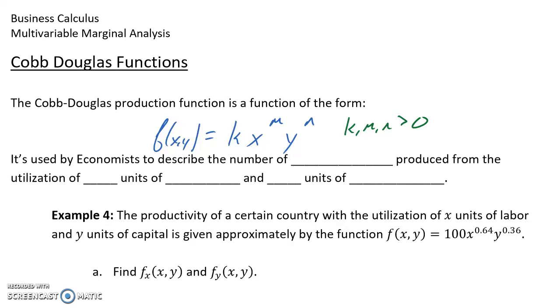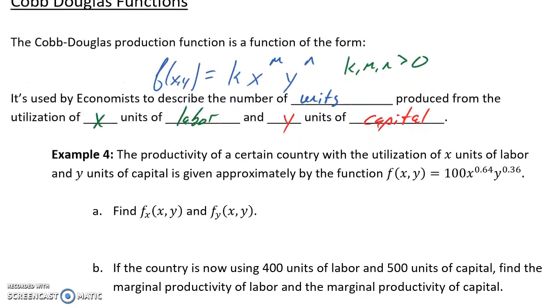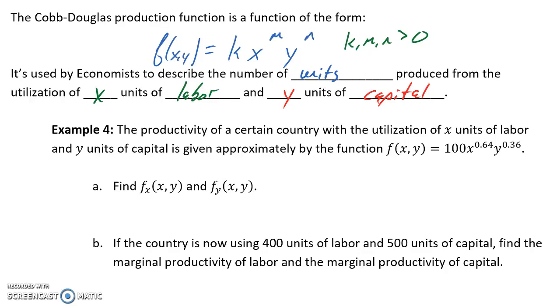What this function does is it's used by economists to describe the number of units f(x,y) produced from the utilization of x units of labor and y units of capital. As a country, a business, any kind of organization applies labor and capital to produce something, how many units are produced based off these two different variables?